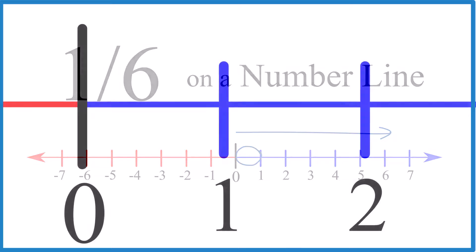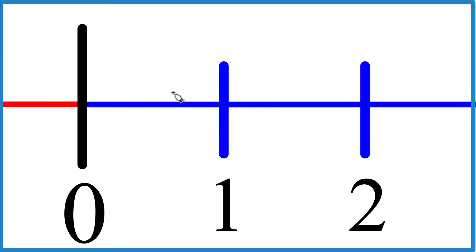So let's zoom in. And remember, we're talking right here between 0 and 1. That's where we're working. Let's divide this into 6 even pieces, because we're talking about 1 piece out of 6. So we'll divide it into 6 pieces, and then we'll find that 1 piece.